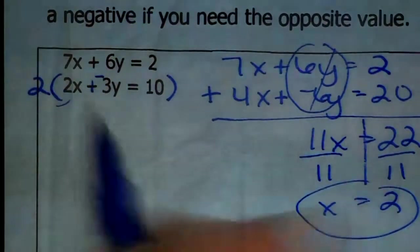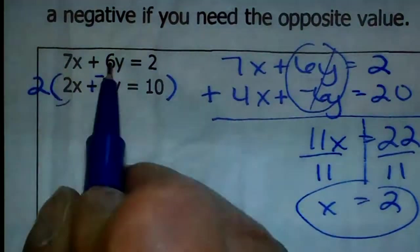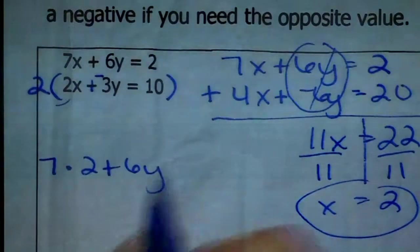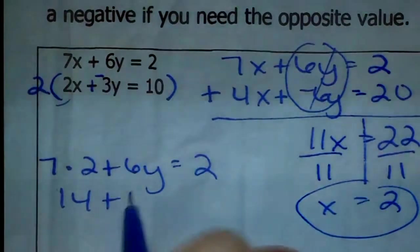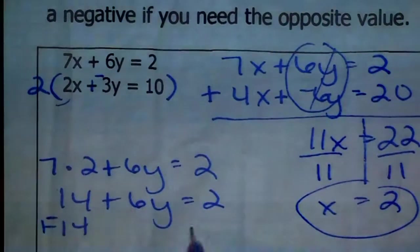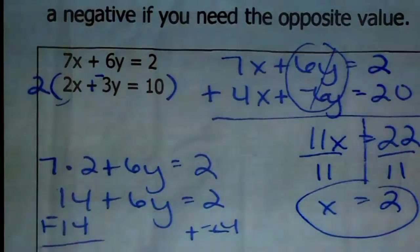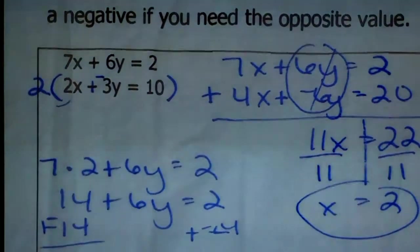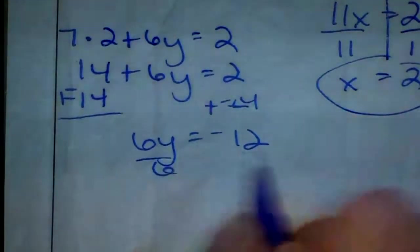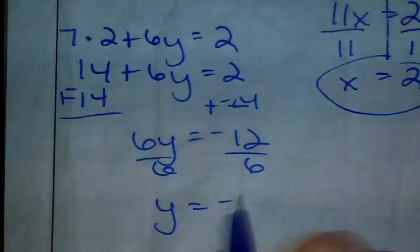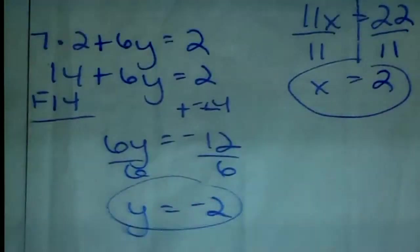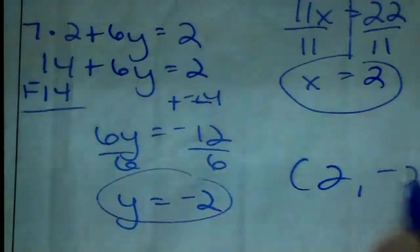Now I'll substitute X equals 2 into the top equation: 7 times 2 plus 6Y equals 2, or 14 plus 6Y equals 2. Subtract 14 — add negative 14 — to get 6Y equals negative 12. Divide each side by 6 and Y equals negative 2. The solution to this system is 2, negative 2.